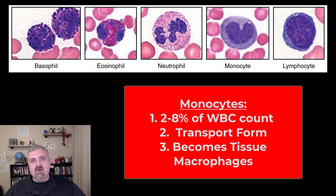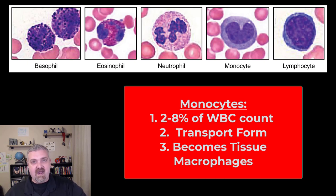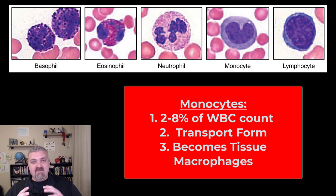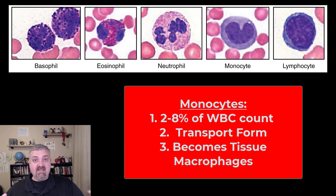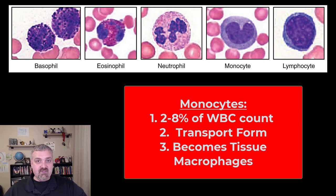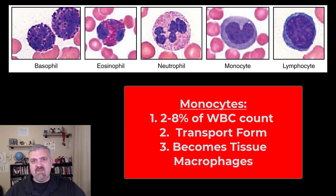We also have the monocyte. Monocytes are 2 to 8% of the white blood cell population. Monocytes are really just a delivery vehicle — a monocyte uses your blood as a transportation network, and when it gets to its location it will become a tissue macrophage. Some macrophages travel around as free macrophages; others are known as fixed macrophages that stay in a given area, like the microglia in your brain, alveolar cells in your lungs, or Kupffer cells in your liver. Macrophages are big eaters — their job is to engulf foreign pathogens, worn out red blood cells, other cell types, and debris. They're the cleanup group.